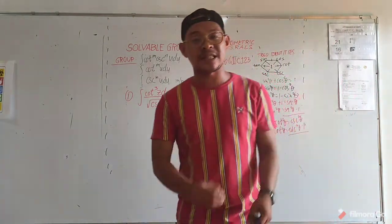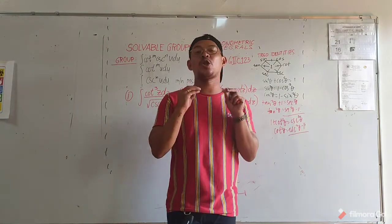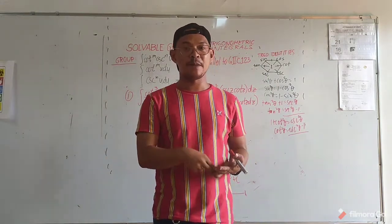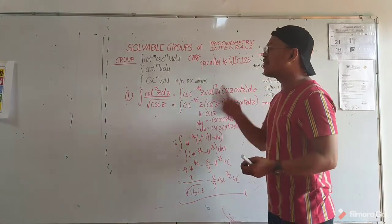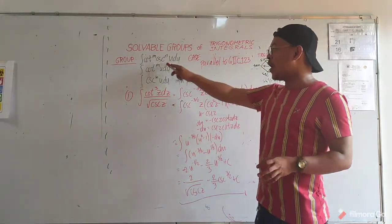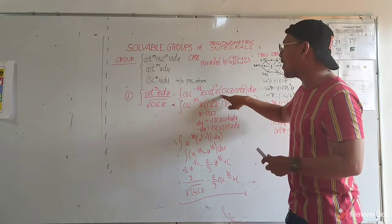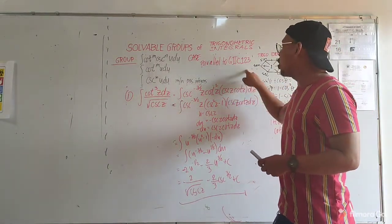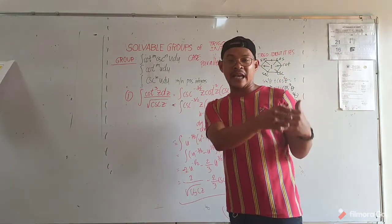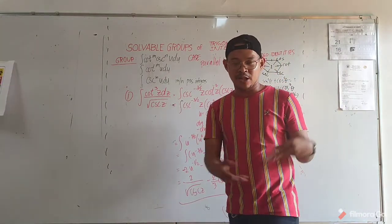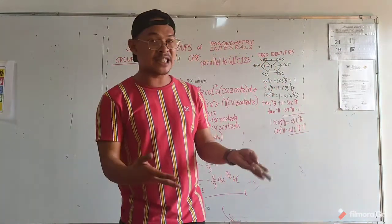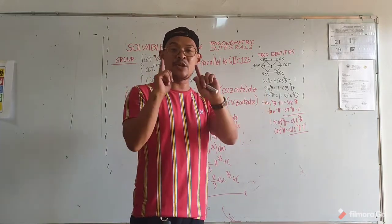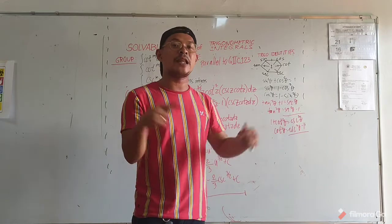Just try to solve different problems involving these rules and follow the procedure. Always factor cosecant z, cotangent z — parallel to group 2, cases 1 and 2. That ends today's discussion. After this video, there will be some problems you need to try. Don't forget to subscribe. God bless and thank you.